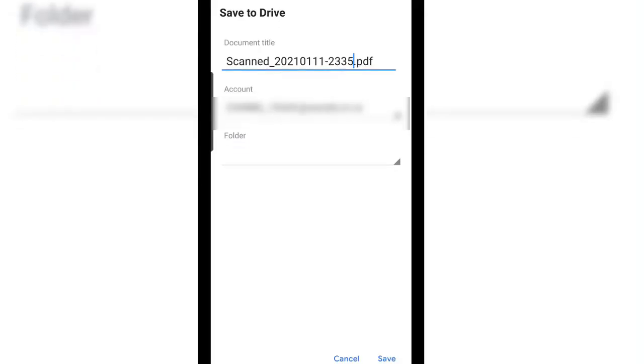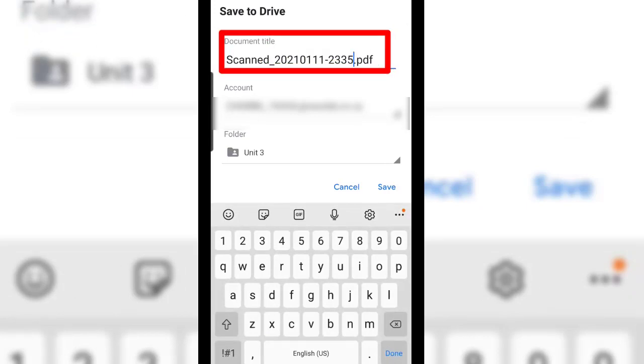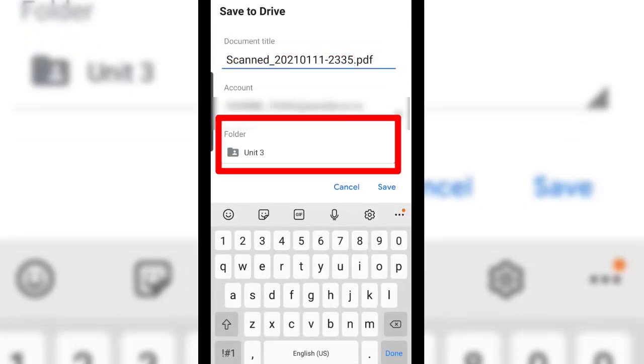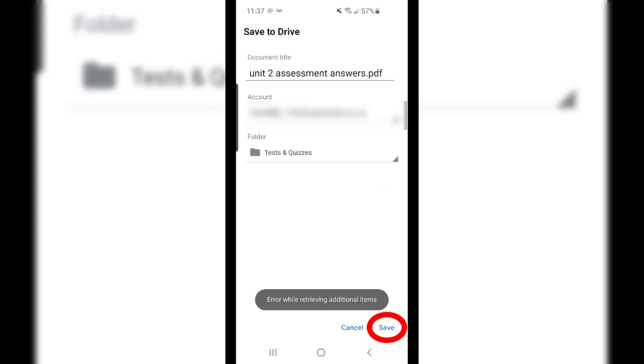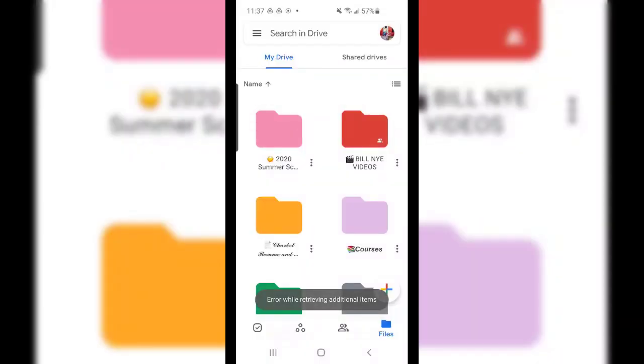Then hit save and decide on the title and the location you want to save it in. Click save, and that's it.